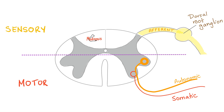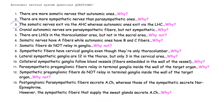Why do somatic fibers start at the anterior horn cells while autonomic starts at the lateral horn cells? When you're running from a tiger, you need to be as fast as possible — that's why you get A-alpha fibers: thick, myelinated, the fastest thing ever. The ventral horn has motor fibers, whether somatic or autonomic. Since somatic fibers have to be the fastest, let's put them as close as possible to the exit. Autonomic takes more time — it starts farther away at the lateral horn. The somatic is closest to the exit because you're running from a tiger.